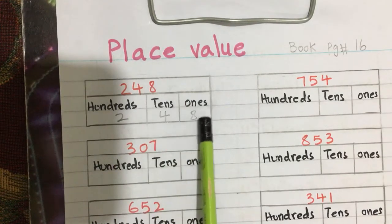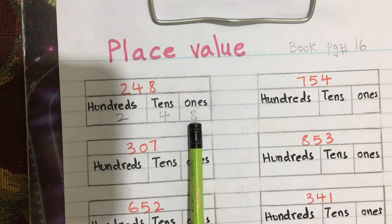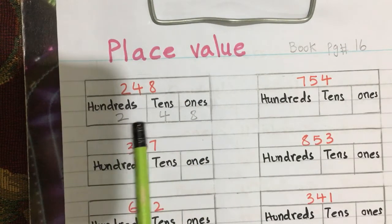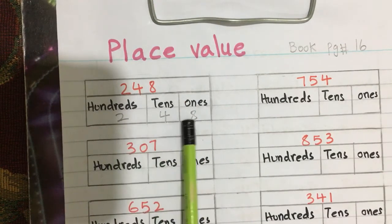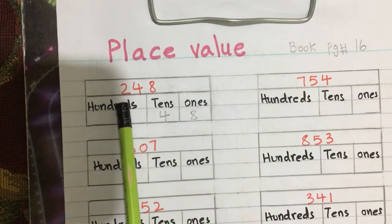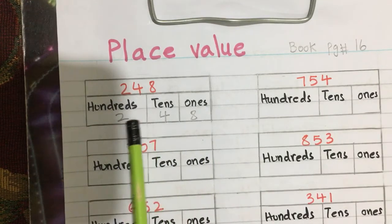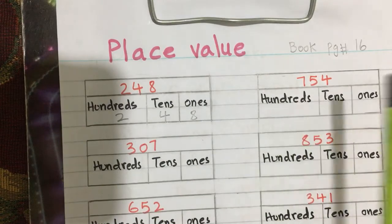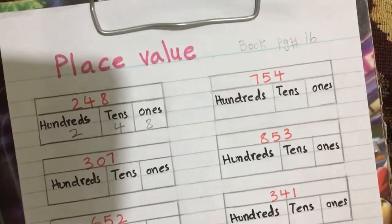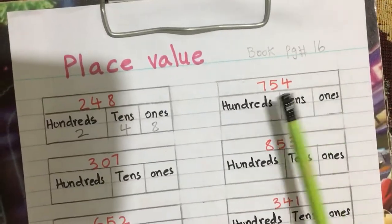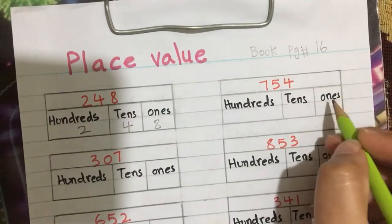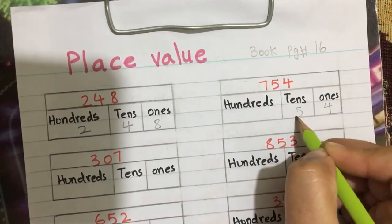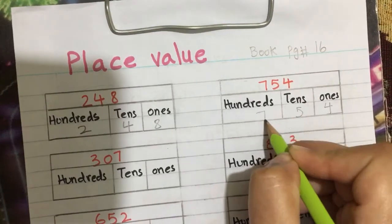In this number, 2 has a place value of hundreds, 4 has a place value of tens, and 8 has a place value of ones. So now we can read this easily: two hundred and forty-eight. Another number is 754. We write place values: ones, tens, hundreds — four, five, seven.